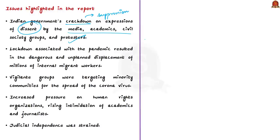The report fiercely criticizes some of India's internal policies and says the government of India and its state-level allies continued to suppress critics during 2020. It also noted the lockdown issues — that the lockdown resulted in dangerous and unplanned displacement of millions of internal migrant workers. Additionally, vigilante groups were targeting minority communities for the spread of coronavirus.